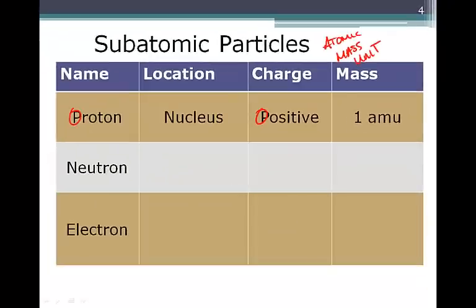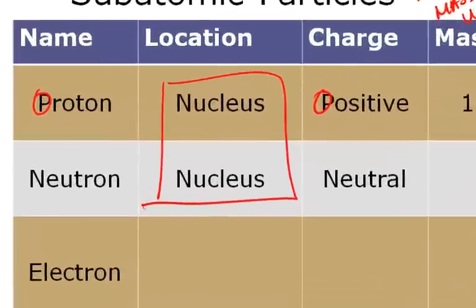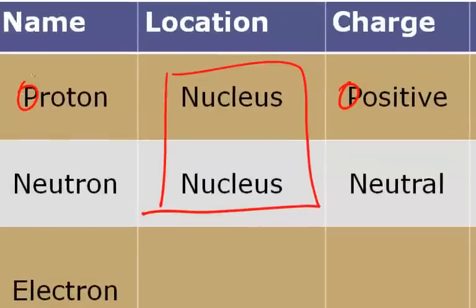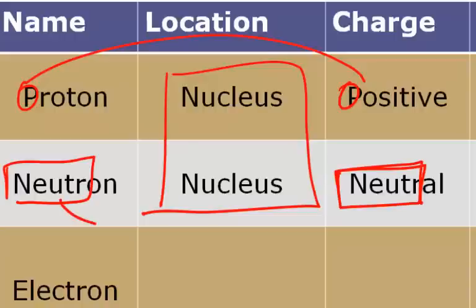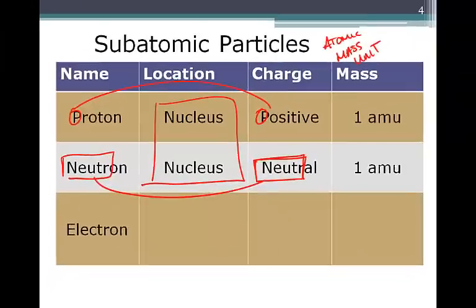Our second subatomic particle, the neutron, is also in the nucleus. So we have two subatomic particles in the nucleus. The neutron is neutral — notice that proton links with positive, and neutron links with neutral: N-E-U-T-R. Neutrons also have a mass of one atomic mass unit.